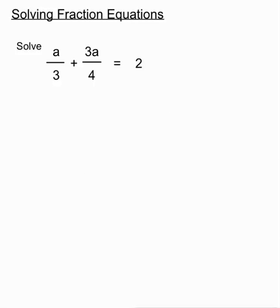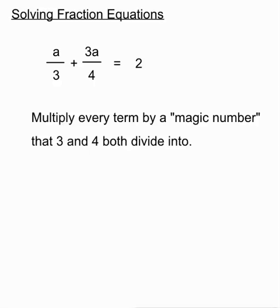First example, we've got a couple of fractions here: a over 3 and 3a over 4 equals 2. Looks pretty complex but I'm going to describe to you one great first move. We're going to look to multiply every term by what I call a magic number. Now that magic number will be a number that 3 and 4 both divide into. One way of finding that magic number is to multiply 3 by 4 and often that does the trick. So in this case we're going to multiply every term by 12.